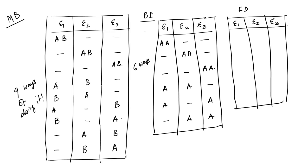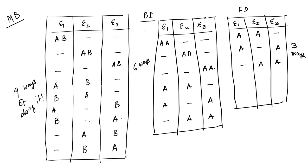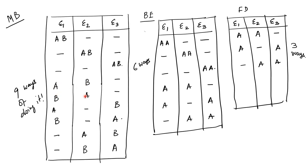For Fermi-Dirac statistics, in addition to indistinguishability, no two particles can occupy the same state. This restricts the arrangements to only 3 ways. The larger number in MB arises because swapping particles A and B is treated as a distinct arrangement, whereas in quantum distributions it is not. MB is the classical distribution, while BE and FD are quantum mechanical.